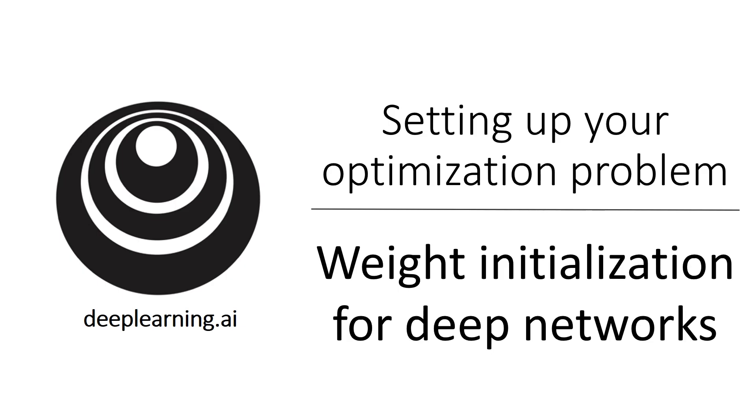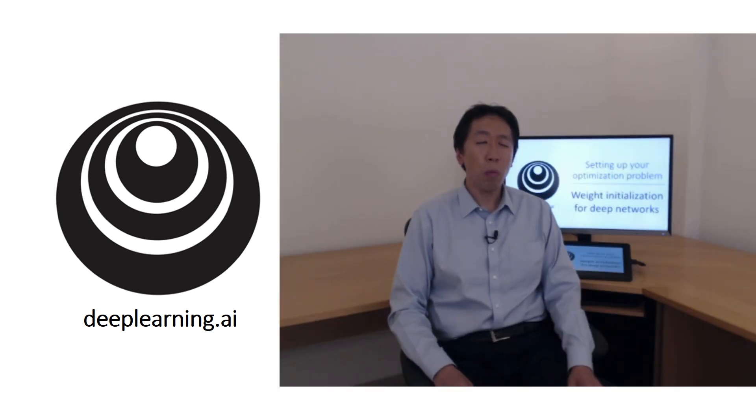In the last video, you saw how very deep neural networks can have the problems of vanishing and exploding gradients. It turns out that a partial solution to this doesn't solve it entirely, but helps a lot is better or more careful choice of the random initialization for your neural network.